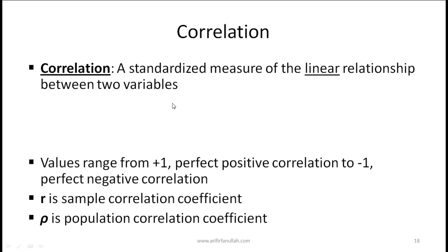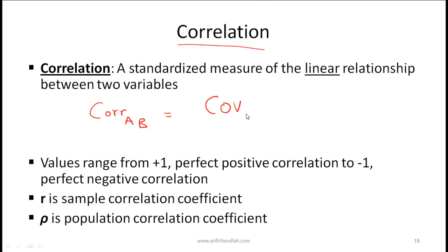To address the challenge of interpreting covariance, we use correlation, which is a standardized measure of the linear relationship between two variables. The correlation between A and B equals the covariance of A and B divided by the standard deviation of A times the standard deviation of B. Correlation values range from +1 (perfect positive correlation) to -1 (perfect negative correlation).